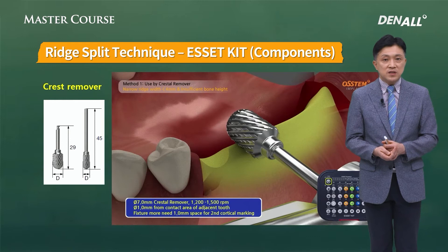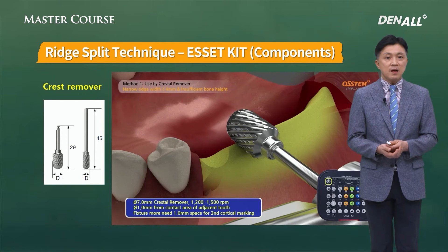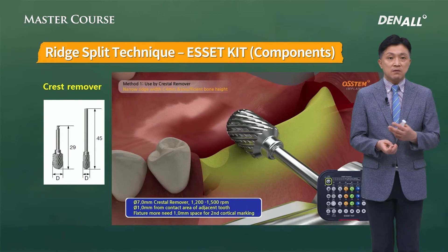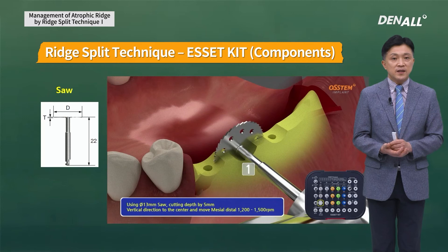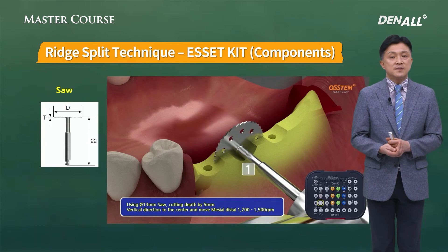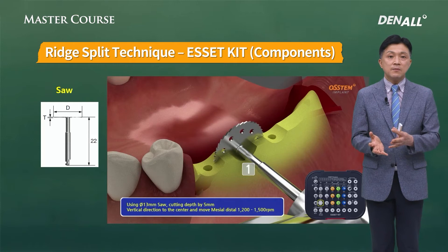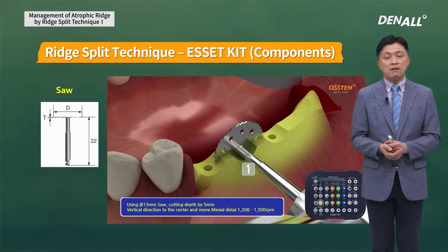The crest remover works at the implant placement position — it removes the thin ridge crest to widen the buccal-lingual width. It can be used with a contra-angle or straight angle. The saw comes in three sizes: 7, 10, and 13 mm actual diameter, each for different purposes. If you place a longer implant, you use a longer saw; for shorter implants, a smaller saw is used.